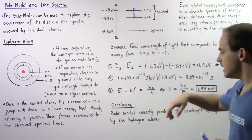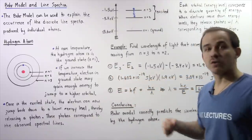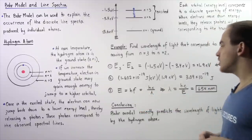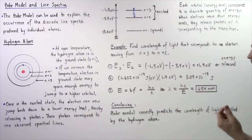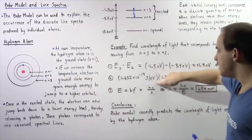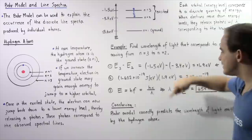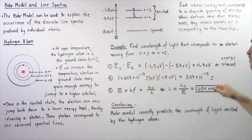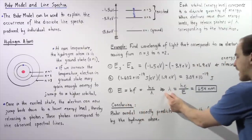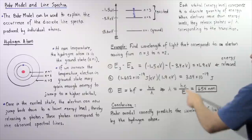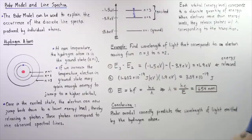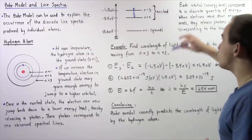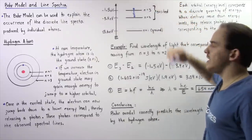Now we apply the equation E equals hf, which gives us the energy found inside our photon with frequency f. We don't want to find the frequency — we want to find the wavelength. So we replace frequency with c divided by wavelength. Here, h is Planck's constant, c is the speed of light, and wavelength is what we are looking for. We know h, we know c, and we found E. So we rearrange and solve: wavelength equals h times c divided by E. Plugging those into our calculator, we get about 654 nanometers — the wavelength of the photon of light produced when the electron goes from n equals 3 to n equals 2.